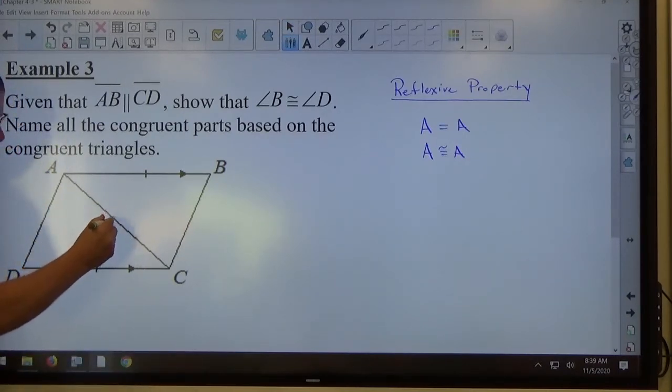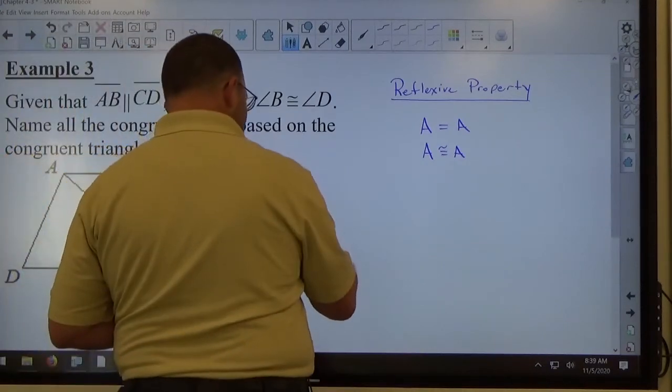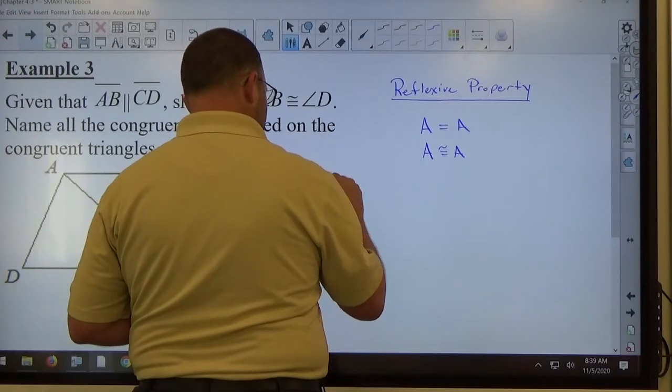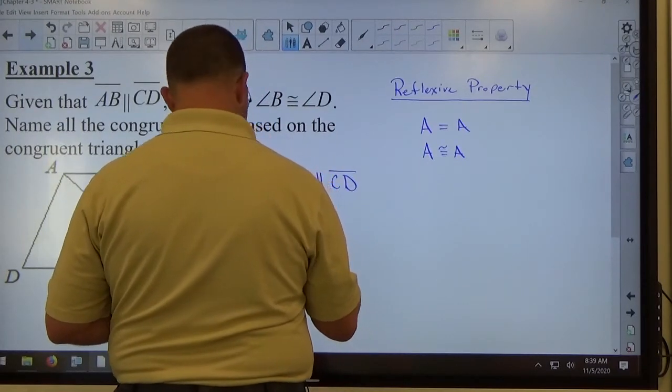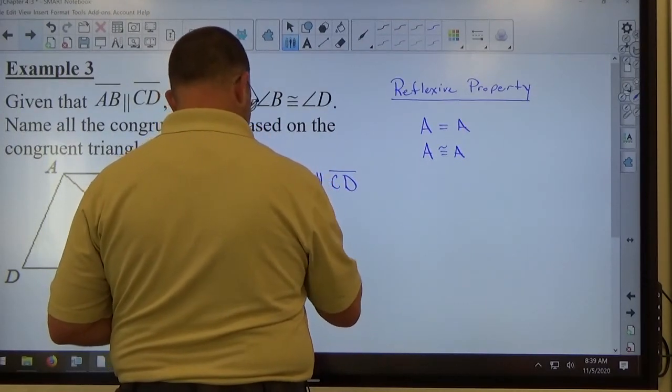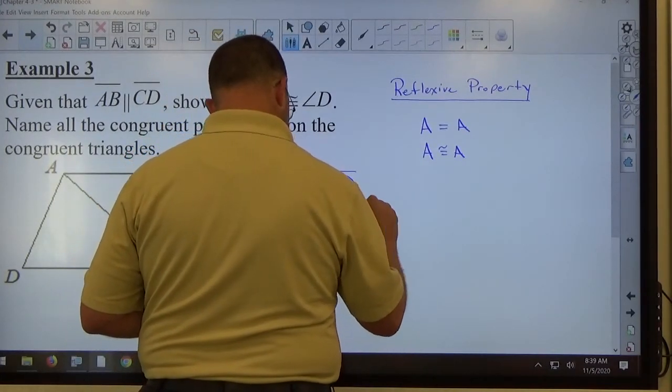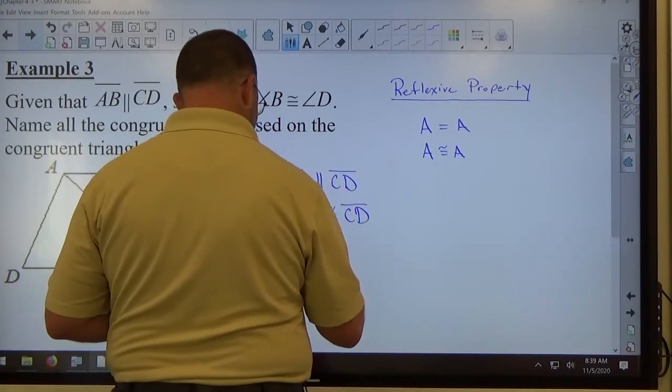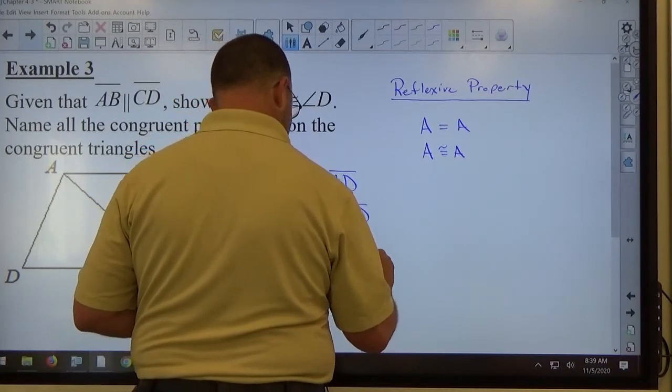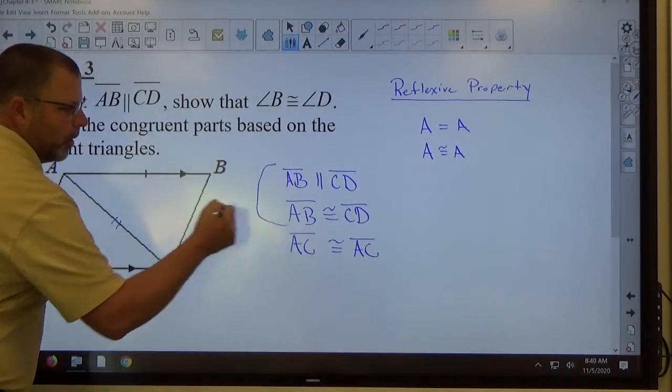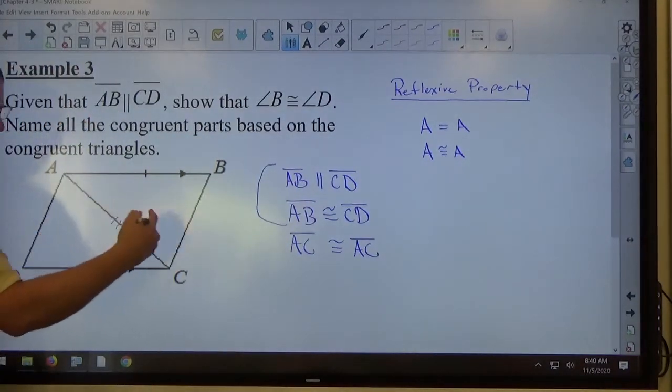Okay, I don't know if it's congruent to anything else. I'm going to mark it with two marks instead of one. So as far as stating things, I'm going to state AB is parallel to CD. I'm going to state AB is congruent to CD. I'm going to state AC is congruent to AC. All right? So both of these things were given to me. That's the reflexive property.